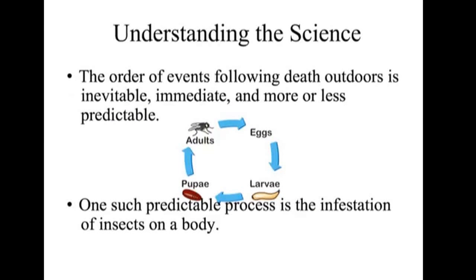The order of events that follow death is predictable. We know the stages of decomposition and how a body breaks down, and we know relatively the pace at which it occurs. We also know the specific process that organisms go through — specifically different species of insect — as they go from an egg up to an adult. That is a predictable series of events.